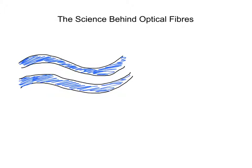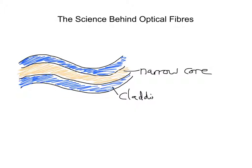So this optical fibre is made up of this outer cladding section, and then this central part here. We'll label them: we've got a narrow core and here we've got outer cladding. So this is a very basic picture of an optical fibre.